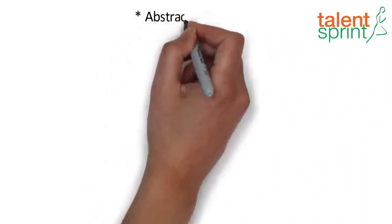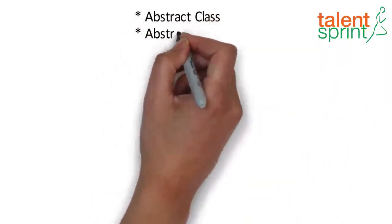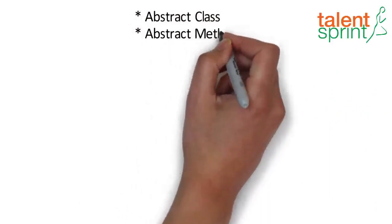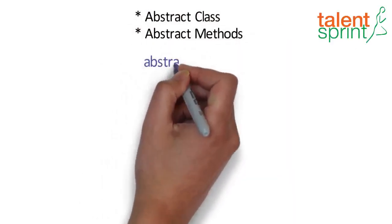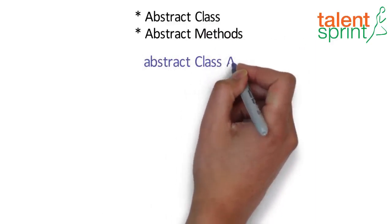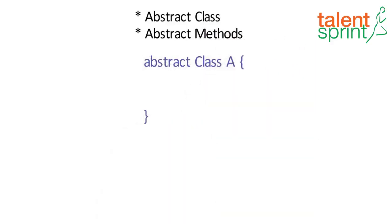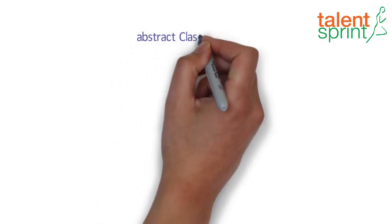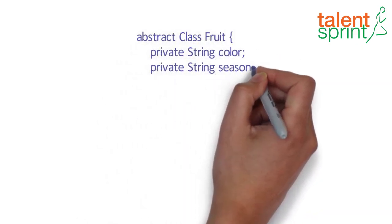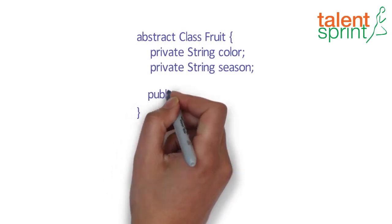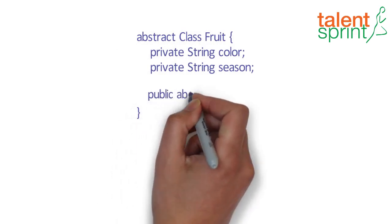Abstract class and abstract method are two ways through which Java assists you in coding at a certain level of abstraction. An abstract class is a class that is declared abstract — it may or may not include abstract methods. An example is a fruit class that has two member variables: color and season.